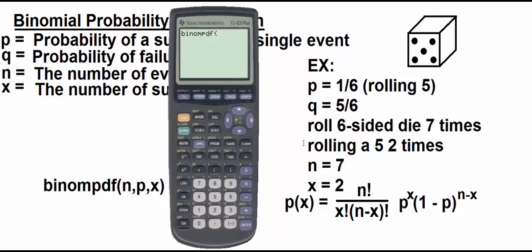Then we need our n. So in our last example, we talked about rolling a six-sided die, rolling a five. You'd have a one-in-six chance of rolling a five, a five-in-six chance of not rolling a five. Let's say you roll that die seven times, and you get exactly two successes. You roll a five twice.